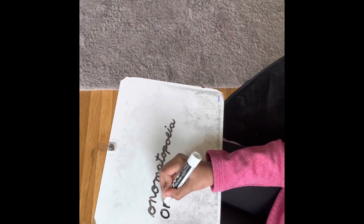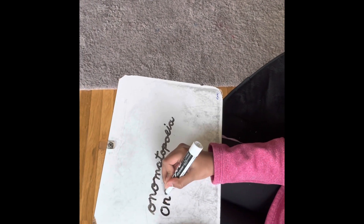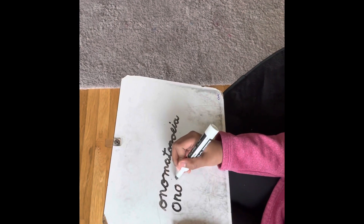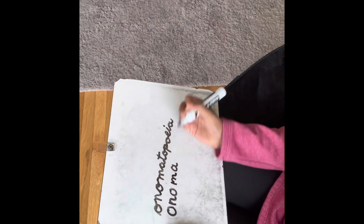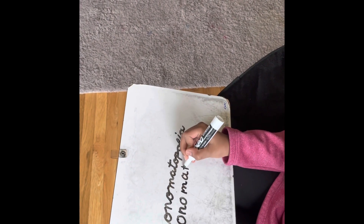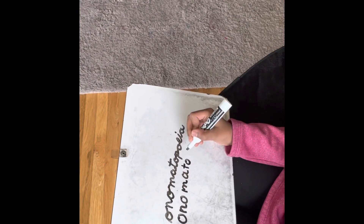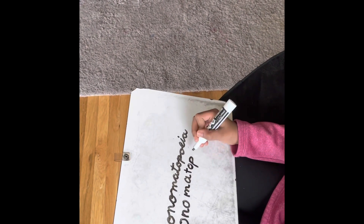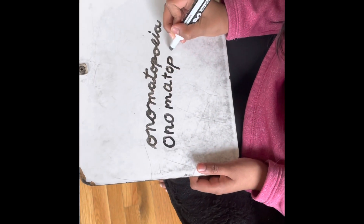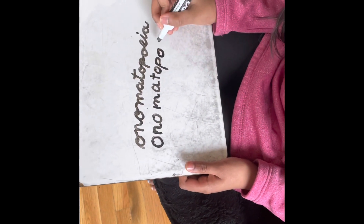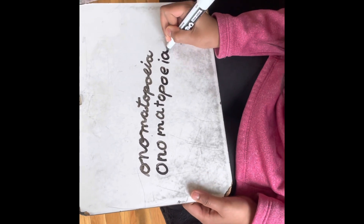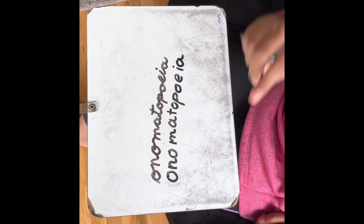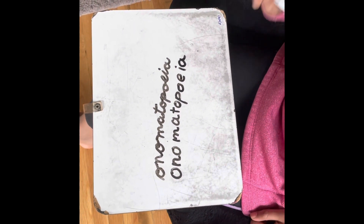So you start with O, and then N-A-O-M-A-T-O-P, O-E-I-A. That's the spelling of onomatopoeia.